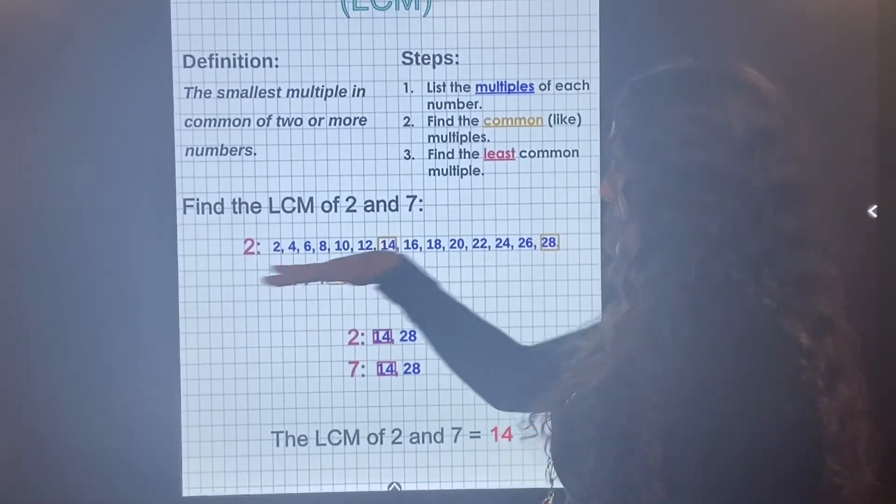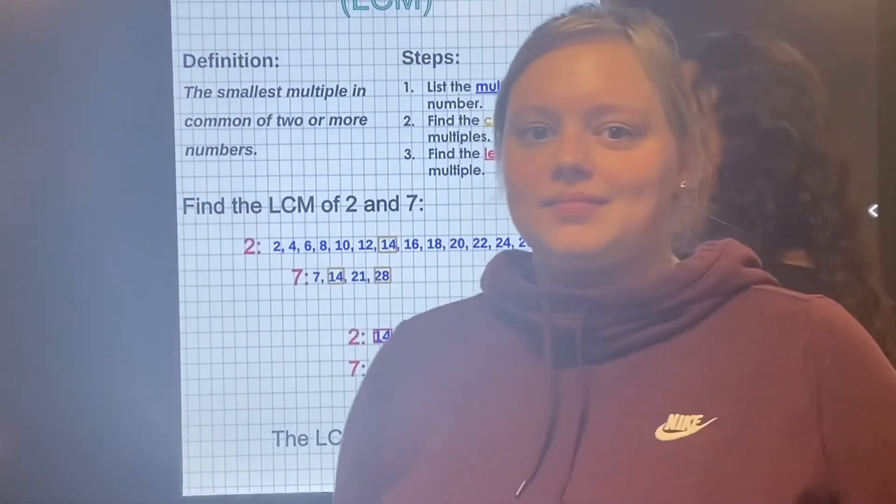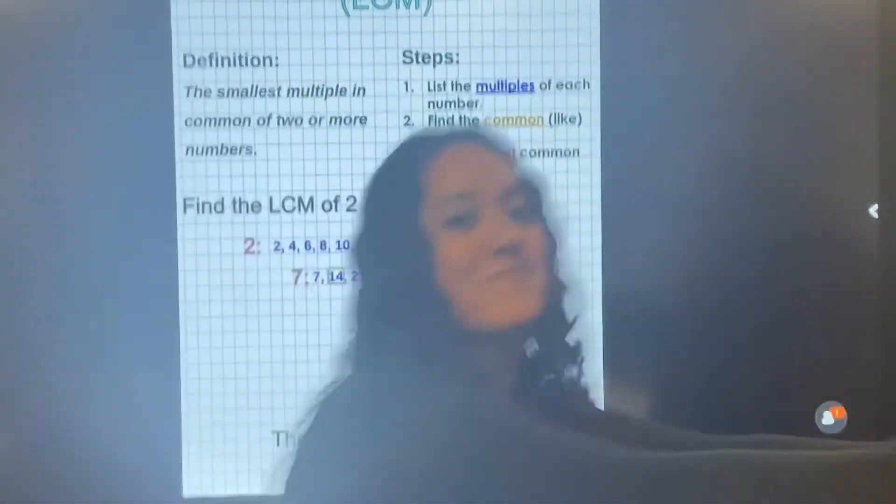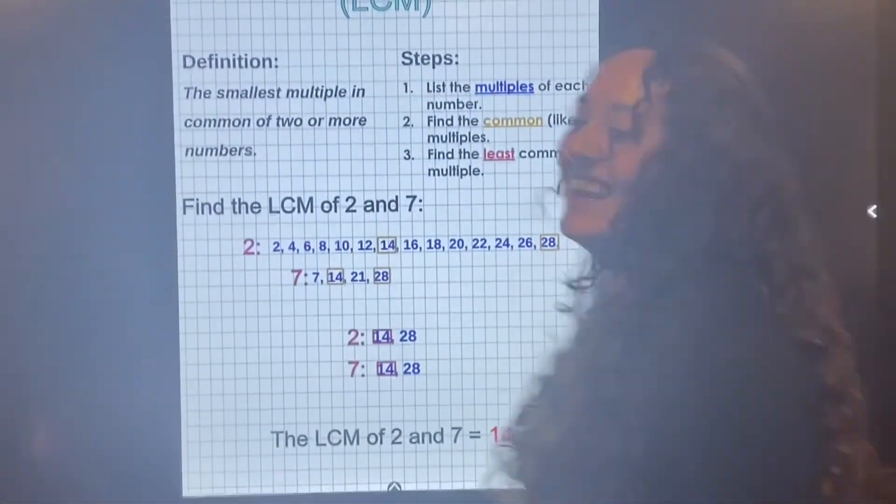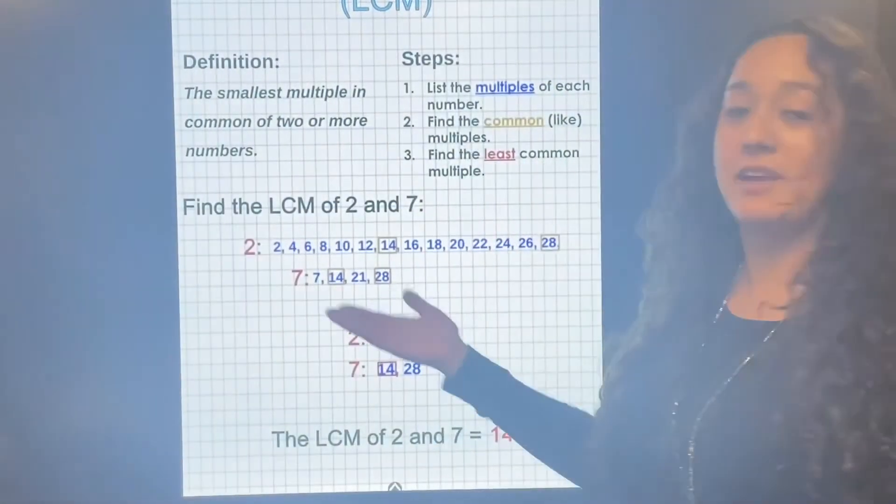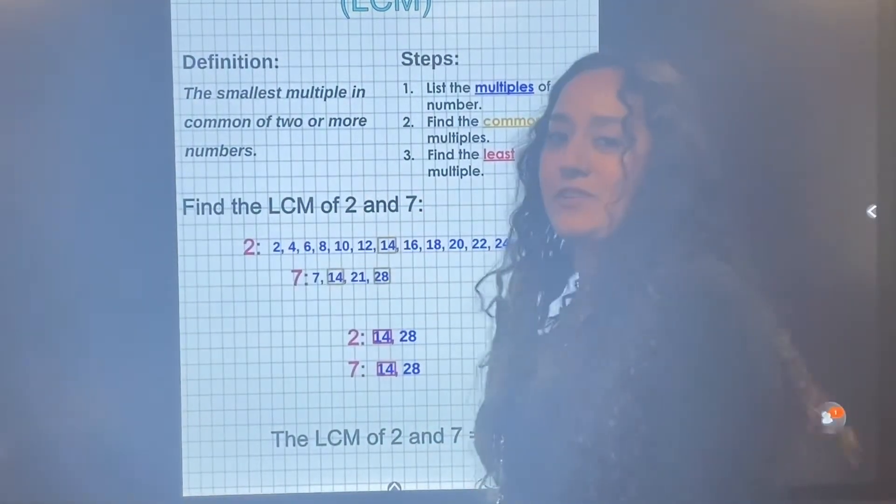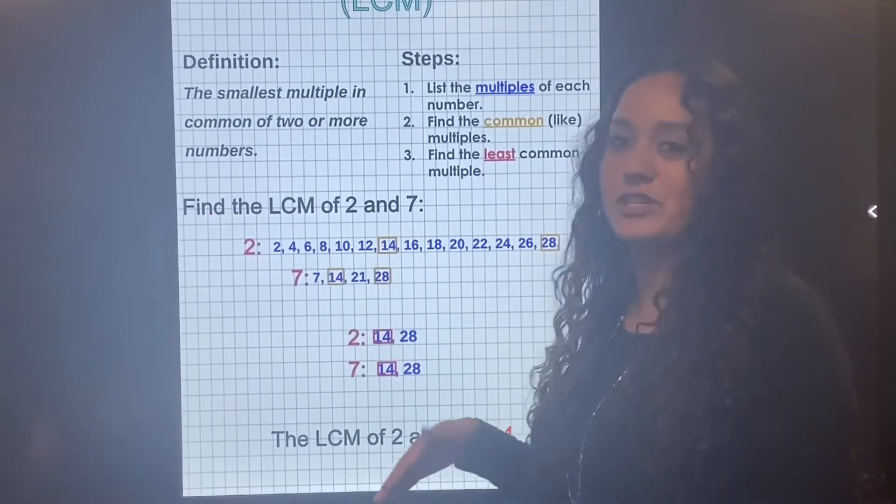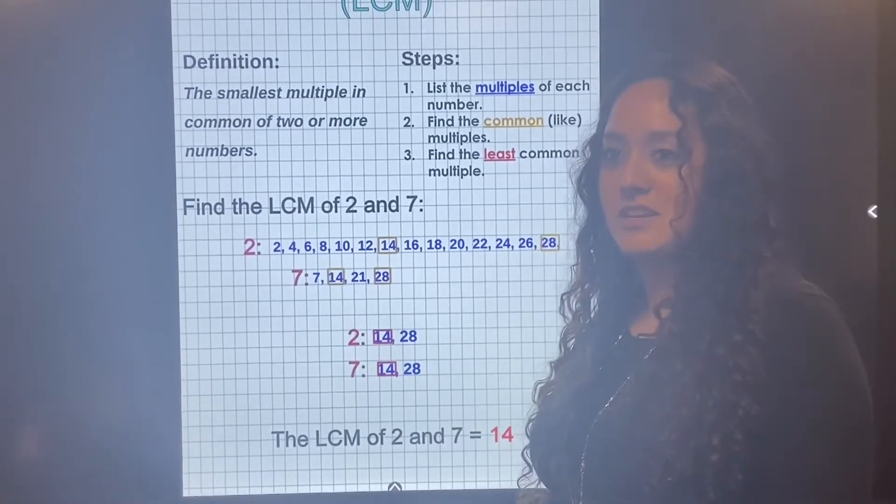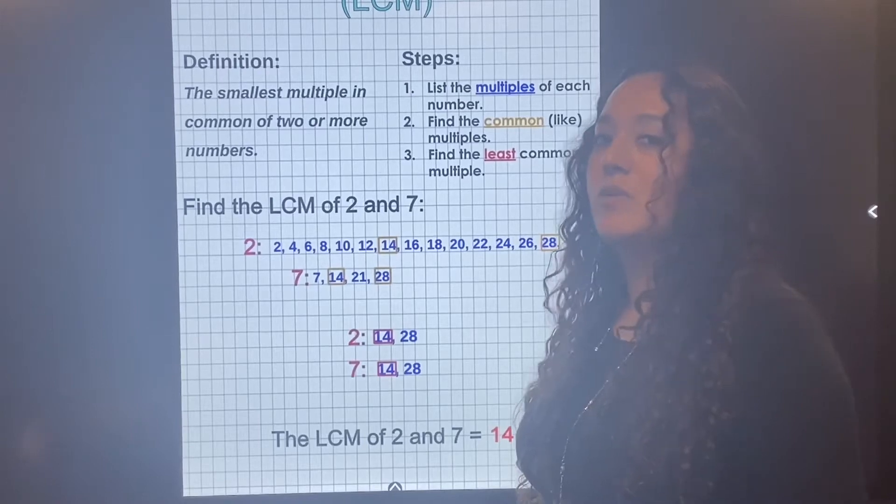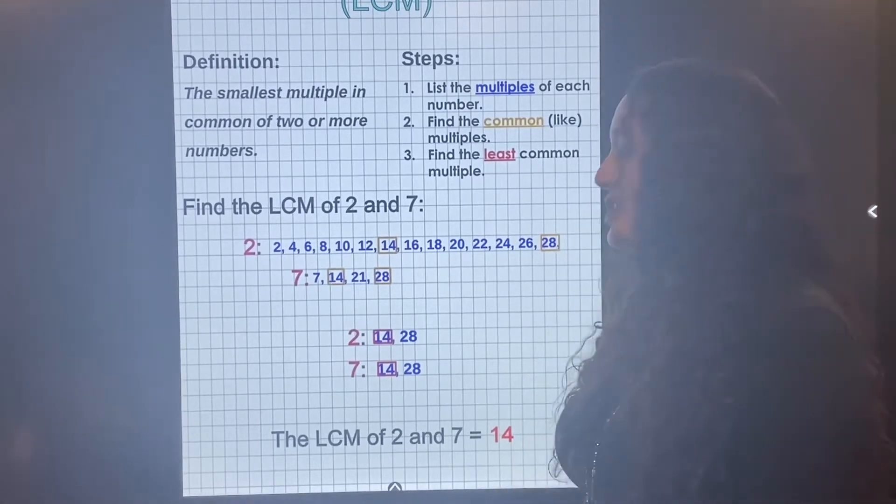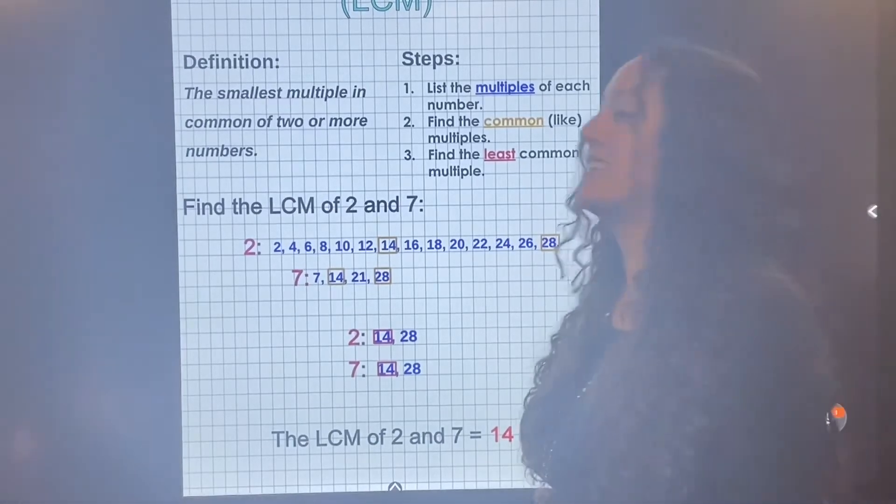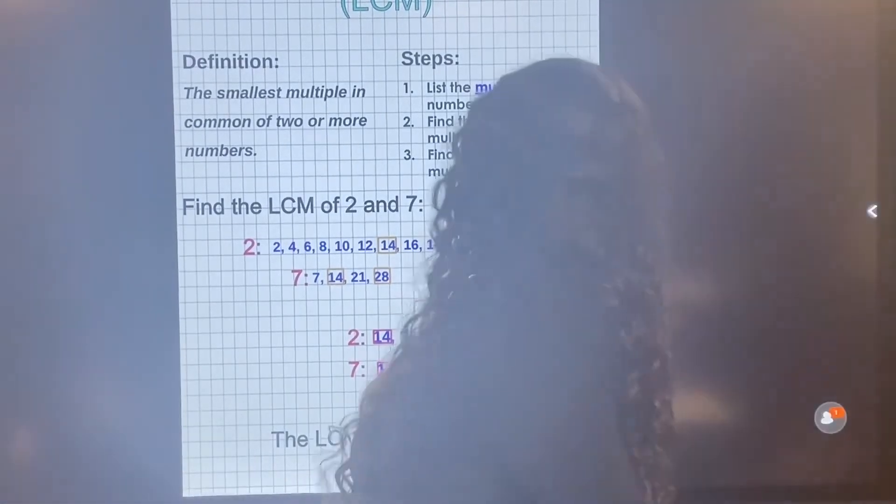So you would list these multiples. You can also think of skip counting. Just kidding. Just kidding, Missy. Yeah. You can skip count. Two, four, six, eight. Who do you appreciate? And then skip count with seven, which is what multiplication is. We appreciate. She came in just at the right time. Like a wrecking ball and put us together.